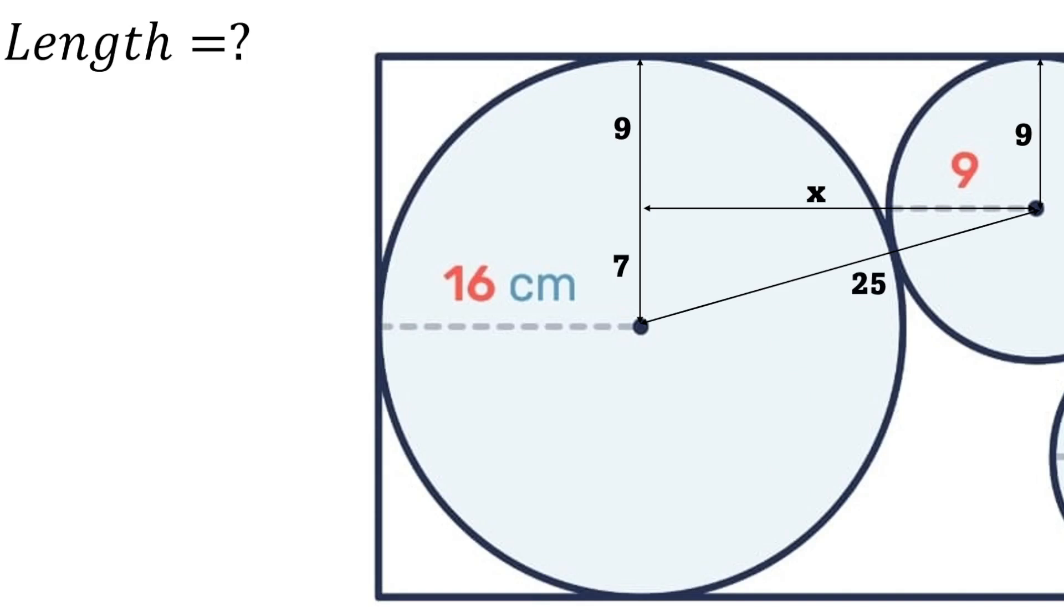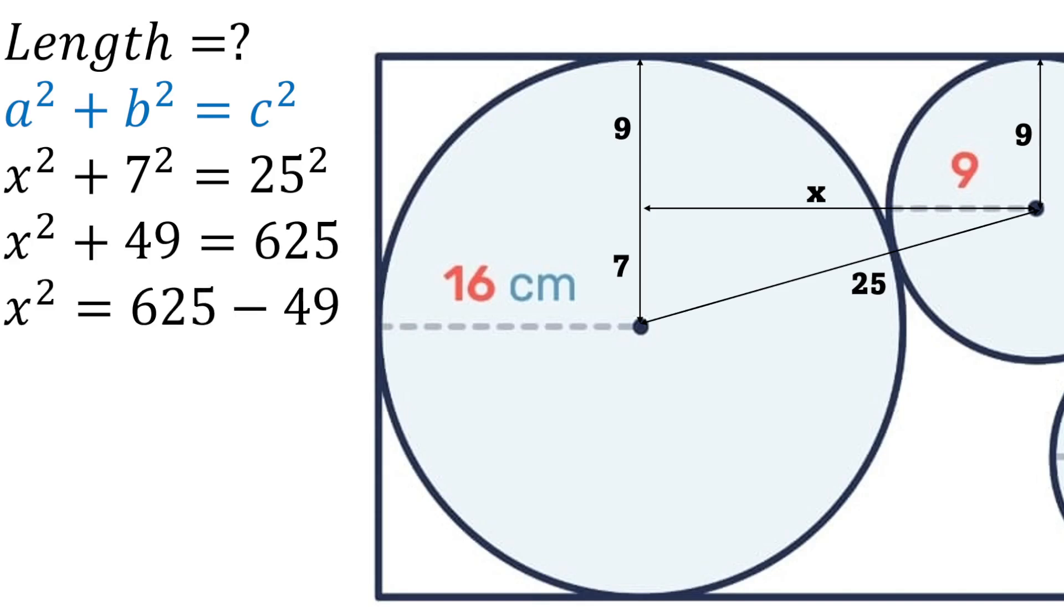We have the 7, the 25, and the x, which we will substitute into Pythagoras's theorem. So x squared plus 7 squared is equal to 25 squared. 7 squared is 49, 25 squared is 625. We transpose and subtract, we get that x squared is 576, therefore x will be the square root of 576, which is 24.